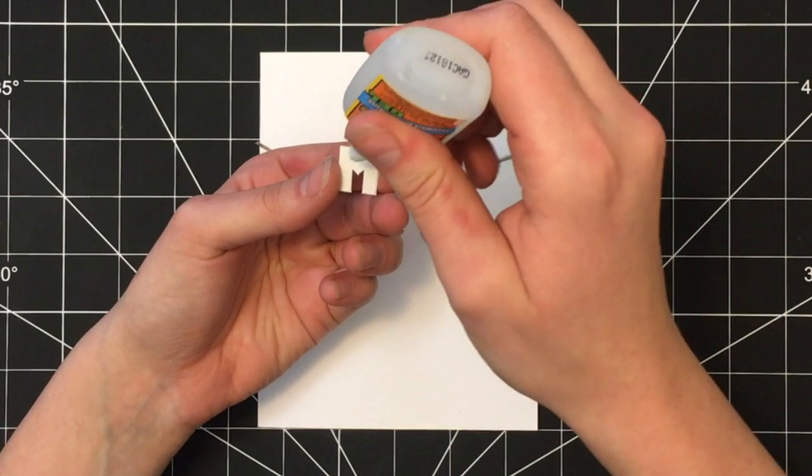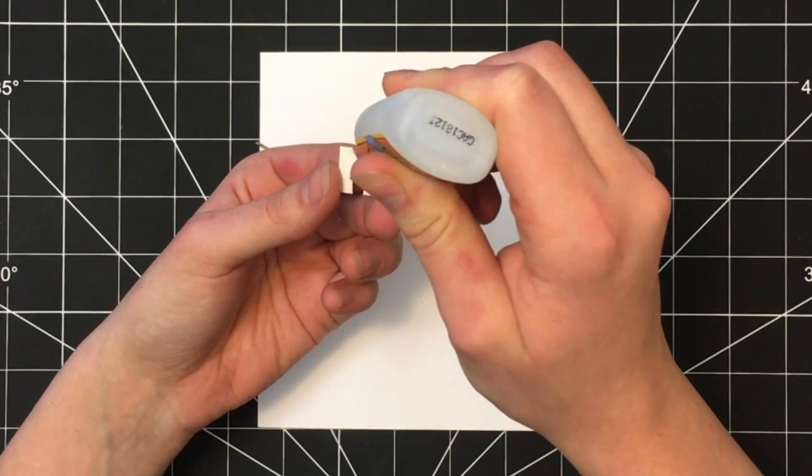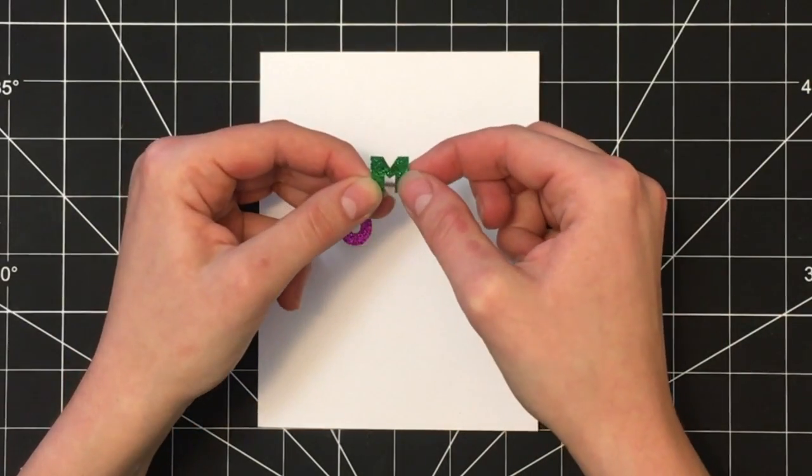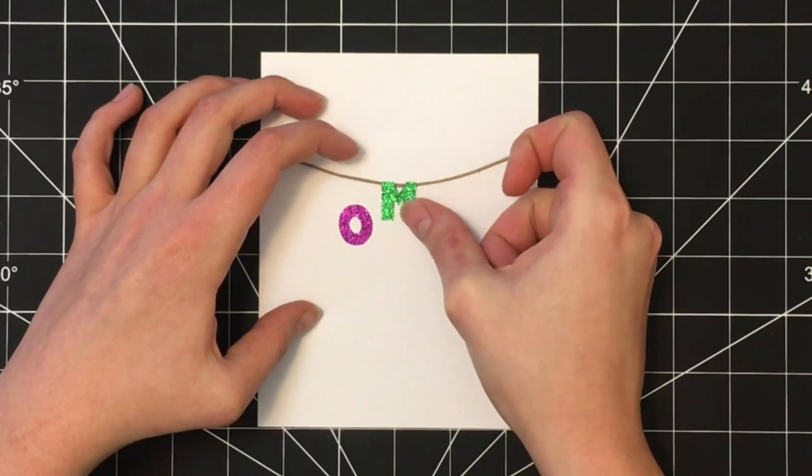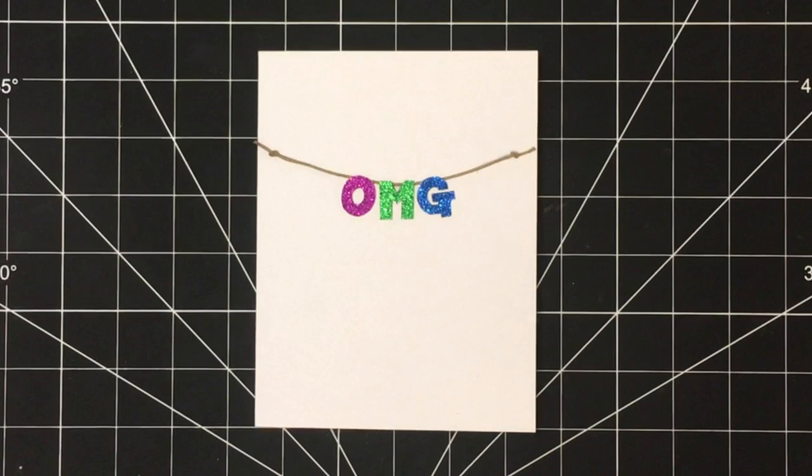Once you have that piece of twine glued on, the next step is to glue on the three letters. Take your glue again, and just place some glue on the top of each letter, and glue that onto the twine. I started with the letter M in the center to make sure that I had the letters spaced equally and also centered on the card.